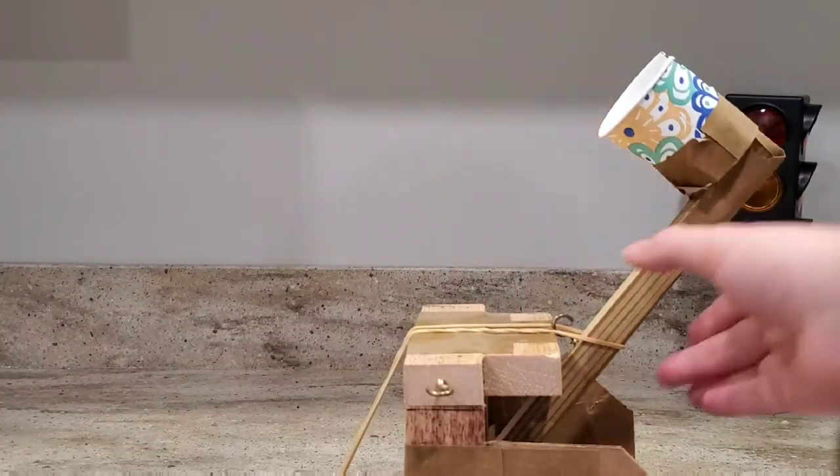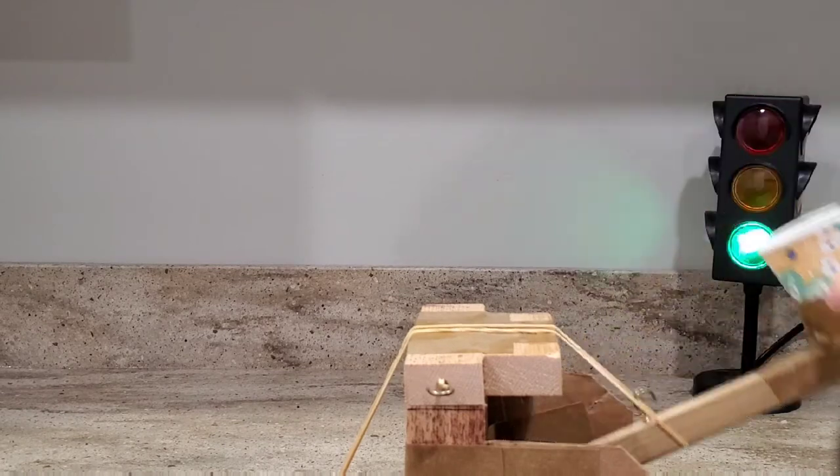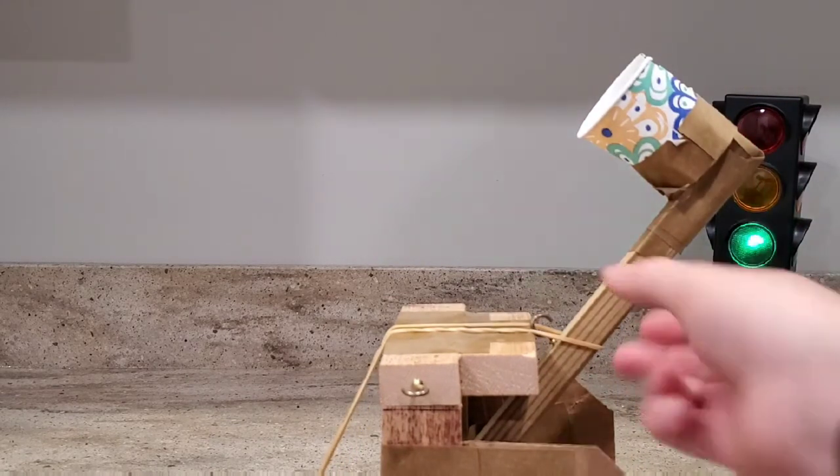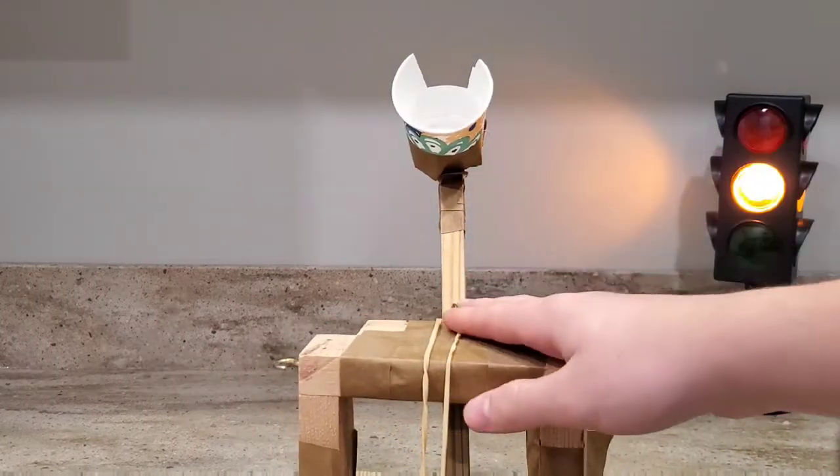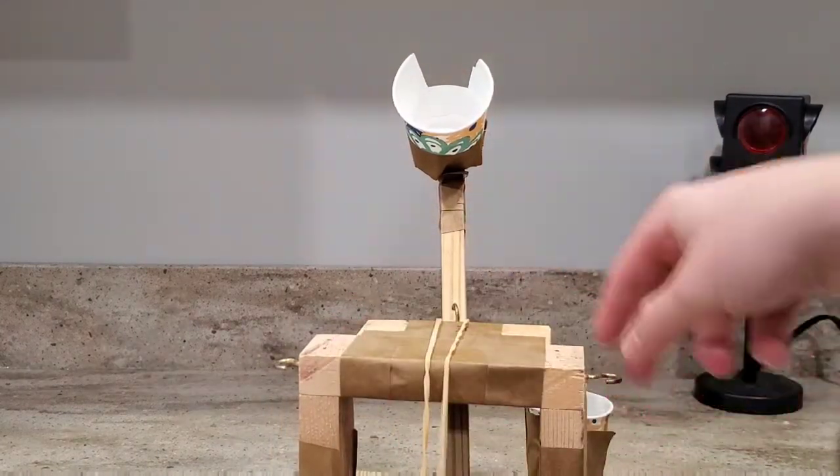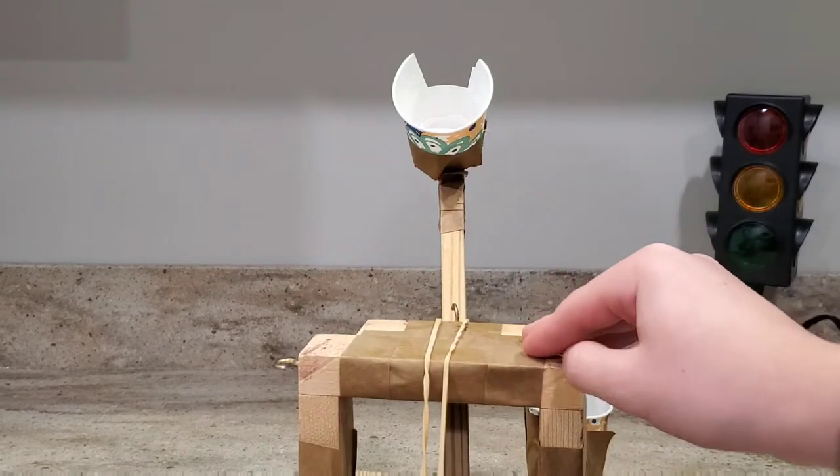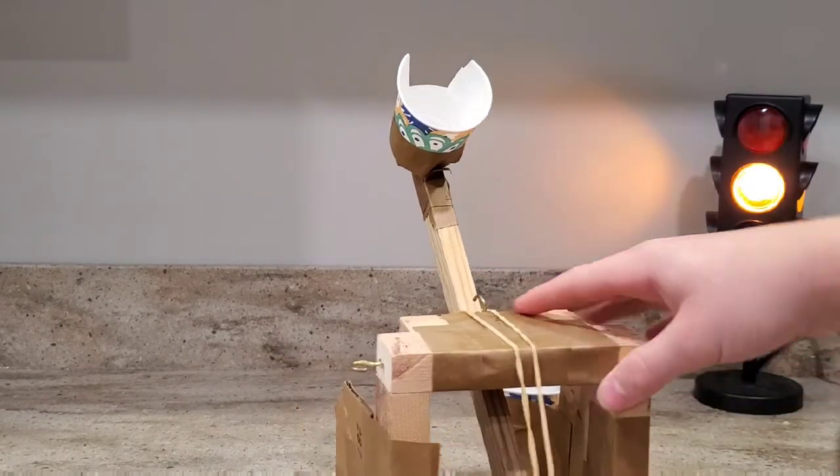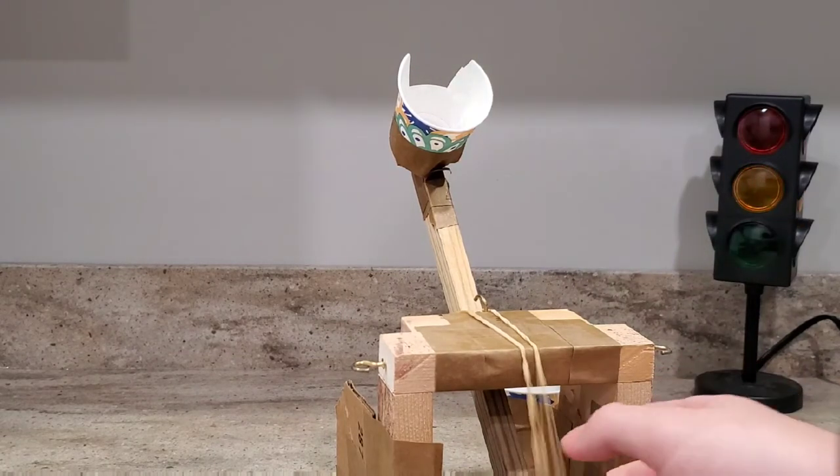So the catapult is powered by rubber bands, and as the tension pulls back and then releases, it should launch the ball. Before, my original design had this giant rubber band right here and two on the sides, but those both broke. So I should probably find a way to repair those as well as making this one stronger because it's kind of loose.